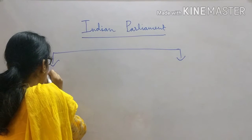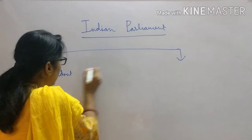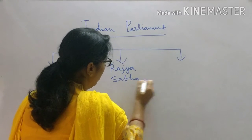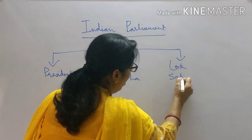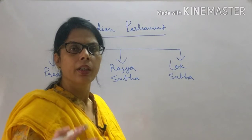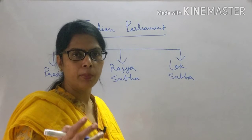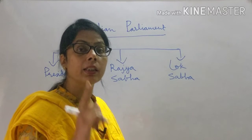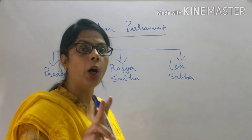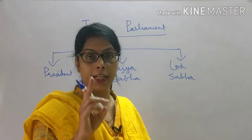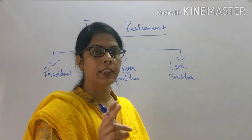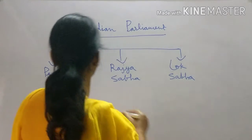Indian Parliament consists of three bodies: the President, Rajya Sabha (upper house), and Lok Sabha (lower house). This means Indian Parliament is a bicameral legislative body. There are two types of legislative body — unicameral, meaning only one house, and bicameral, meaning two houses. In India there is a bicameral legislative body, so there are two houses in the Indian legislative body.